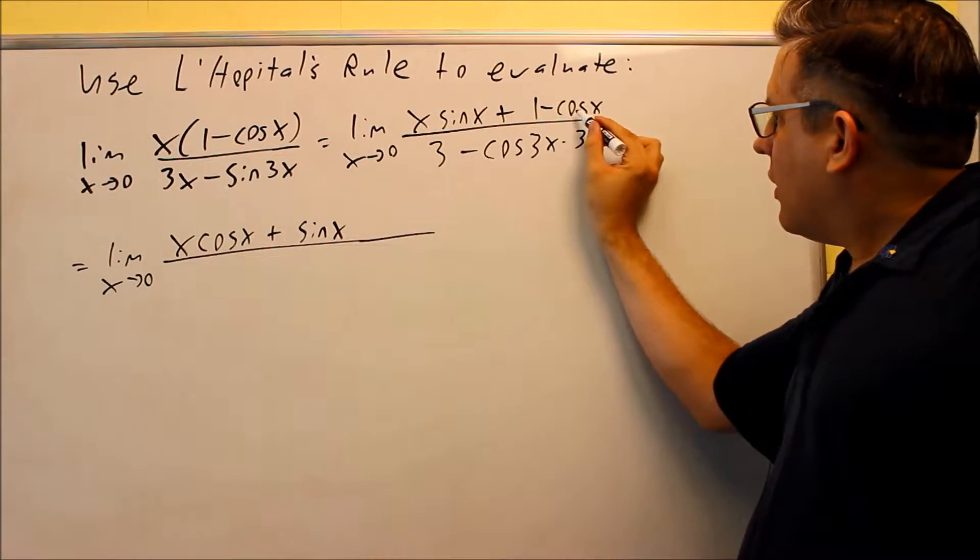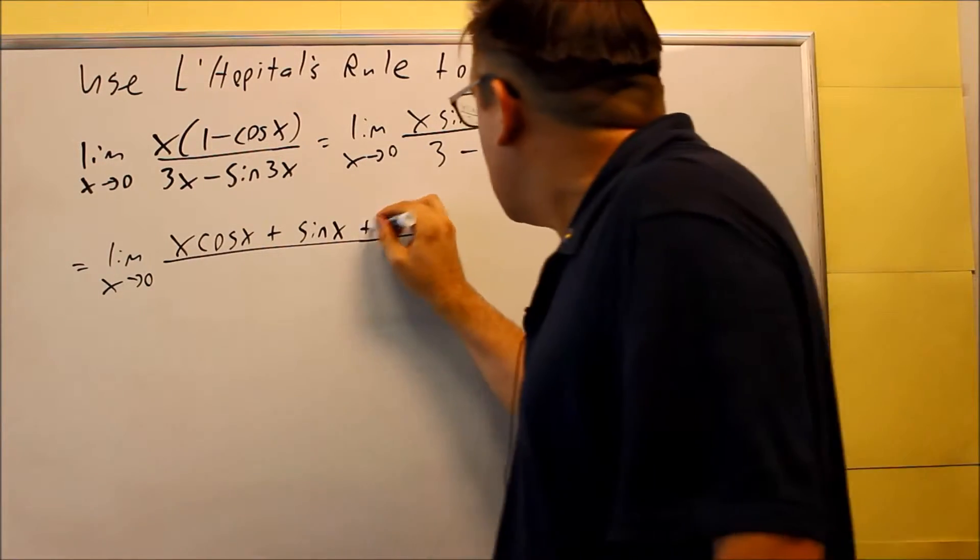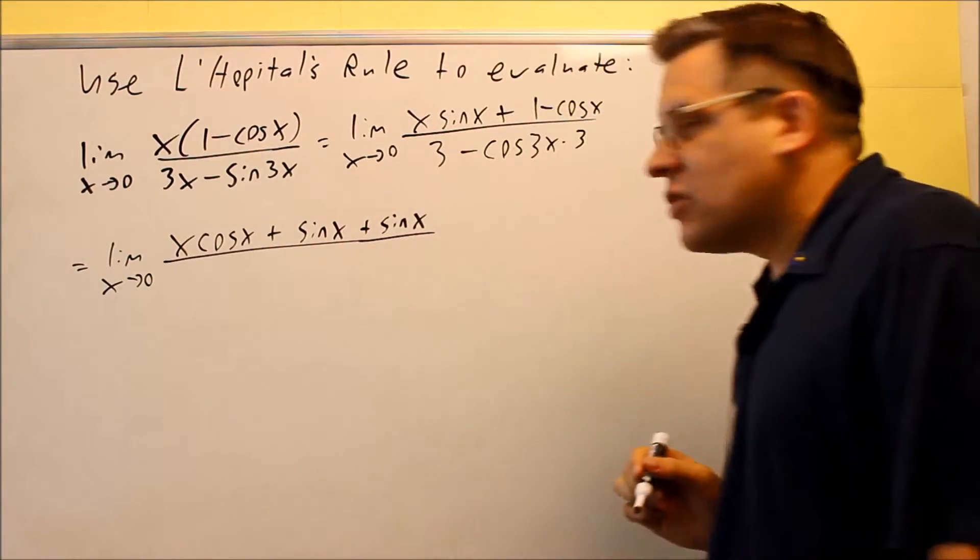This part. Derivative of 1 is 0. Derivative of cosine is negative sine, times the negative again. So, you're going to get a positive sine x there.